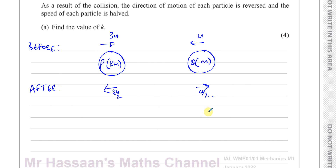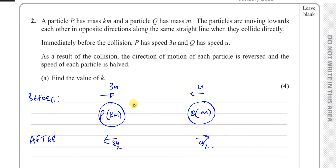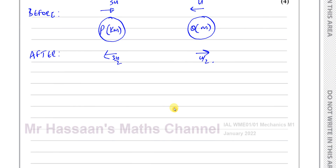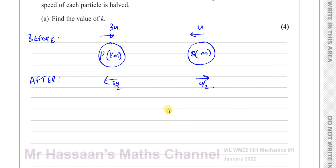There are two ways we could answer this question. One way is by using the conservation of linear momentum, which is probably the way they intended, because part B asks you to find in terms of M and U the magnitude of the impulse exerted on Q in the collision. We could actually answer part B first and use that answer for part A. I'll show you how that works at the end, because sometimes the only way to answer a question is by using the impulse.